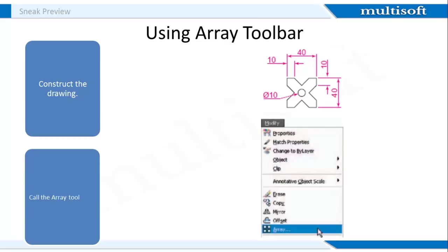Let's discuss the example of a rectangular array. Firstly, select the items you wish to copy. Either select additional items or press Enter to move to the next prompt. Then type R for rectangular array and press Enter. After this, type the number of rows desired, then type the number of columns desired. Now enter the distance between the rows and then the distance between the columns. Construct the drawing and call the Array tool — either click Array in the Modify drop-down menu from the Home modify panel, pick the Array tool icon from the Modify toolbar, or enter AR or Array at the command line.